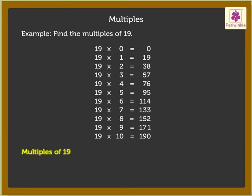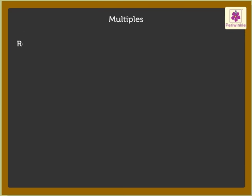Thus, the multiples of 19 are 0, 19, 38, 57, 76, 95, 114, 133, 152, 171, 190, and so on.